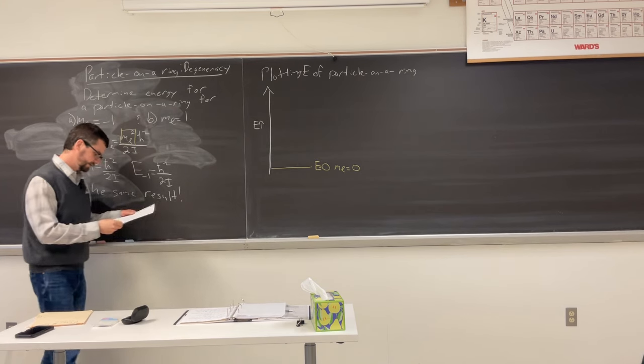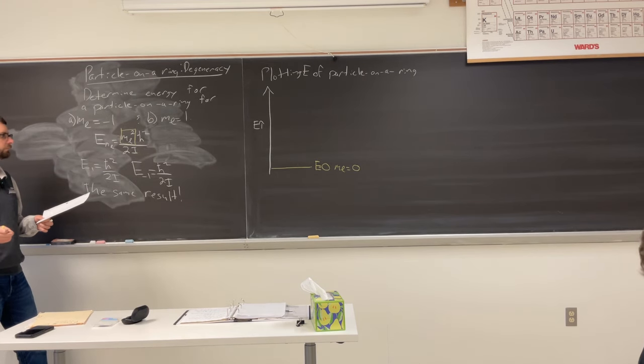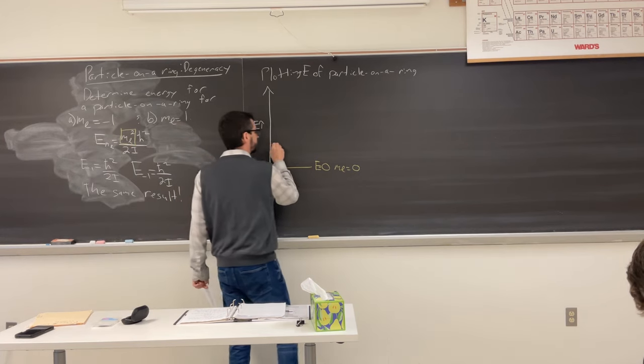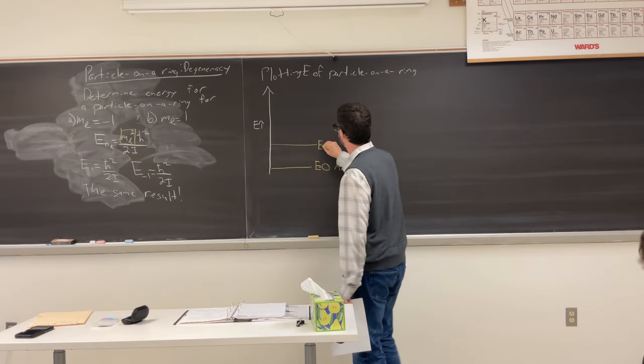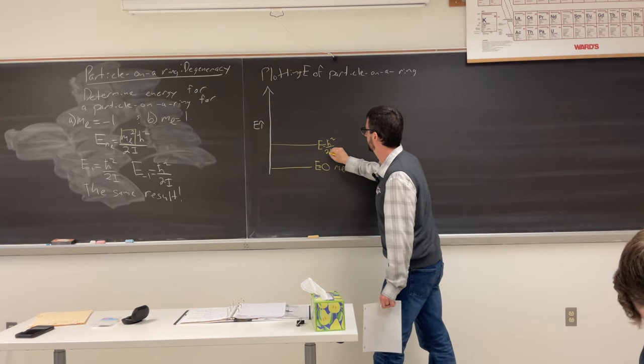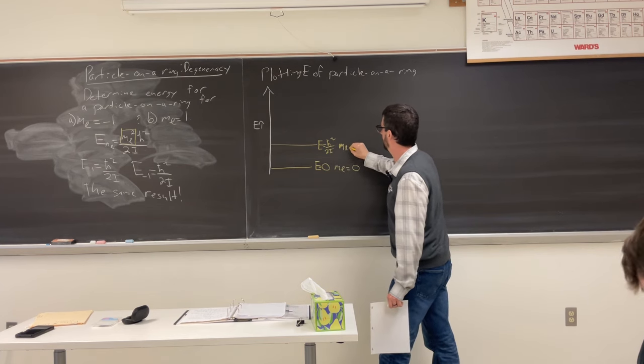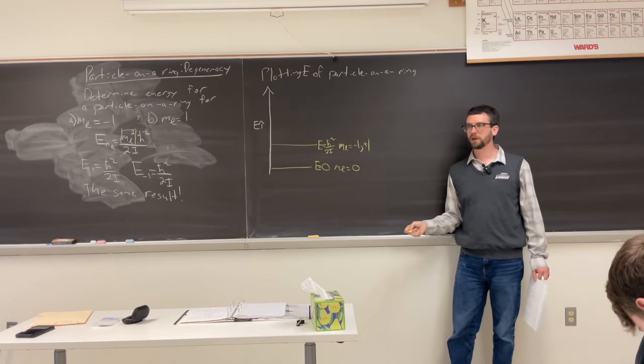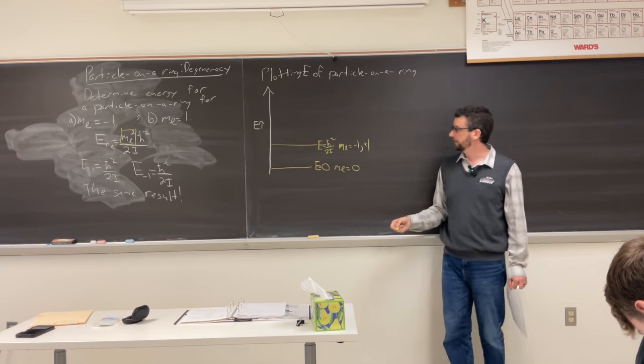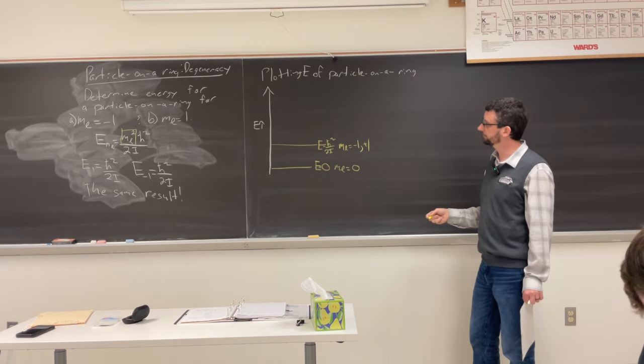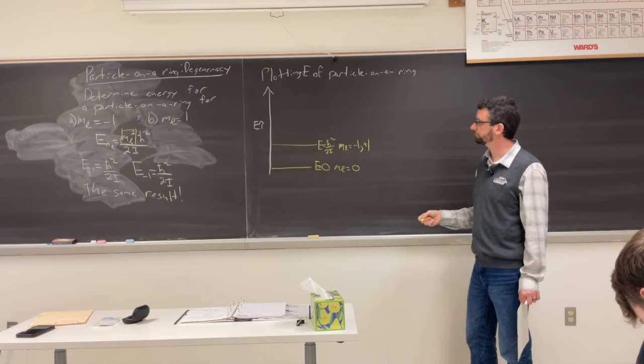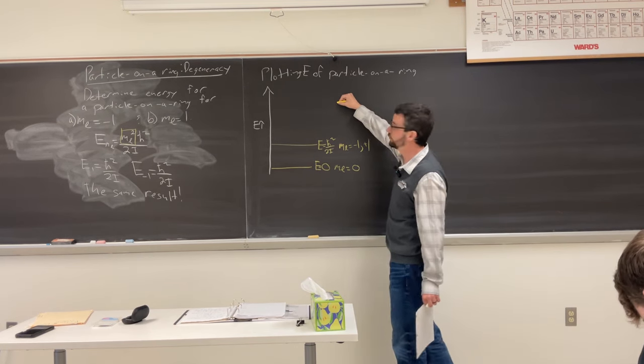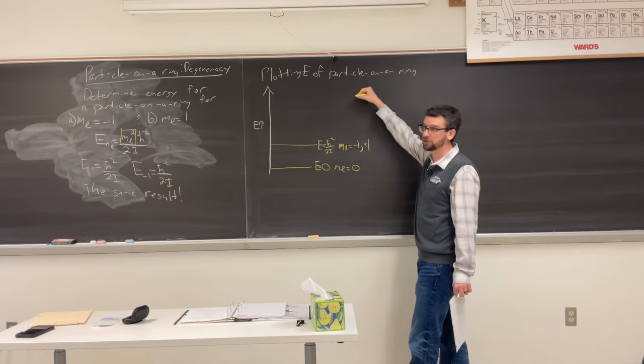What's going to come next? Negative one and plus one. So this state is doubly degenerate. What about the next energy value? ml will be 2 and negative 2, right? What will the energy be?